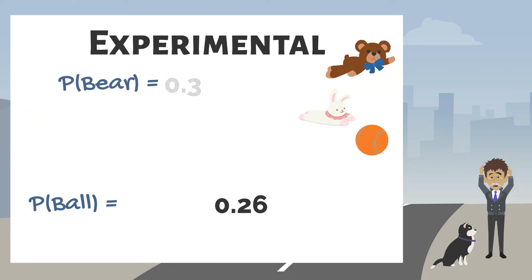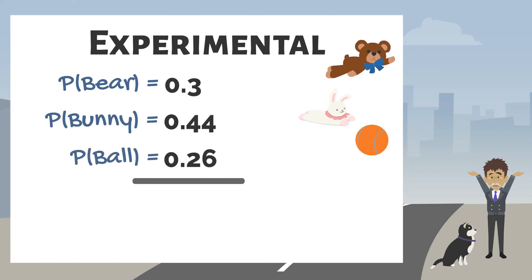Notice that the sum of all the probabilities is 1 or 100%. Remember that 1 represents a certain event. Since one of the three outcomes will happen when Random selects a toy, the probability is certain. Random will choose one of her three toys when she selects a toy to play with. She has no other choice. A sum of 1 always occurs when we add up the probabilities of all unique possible outcomes.